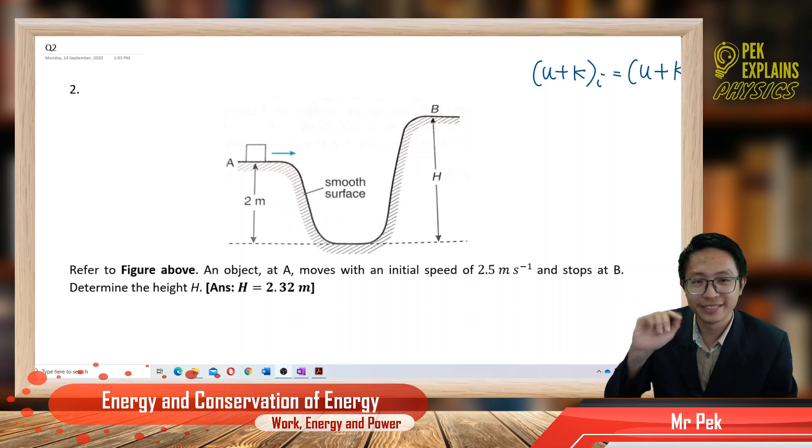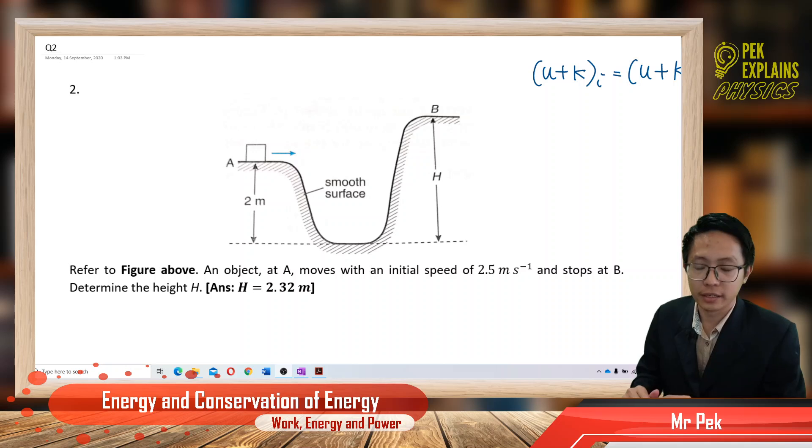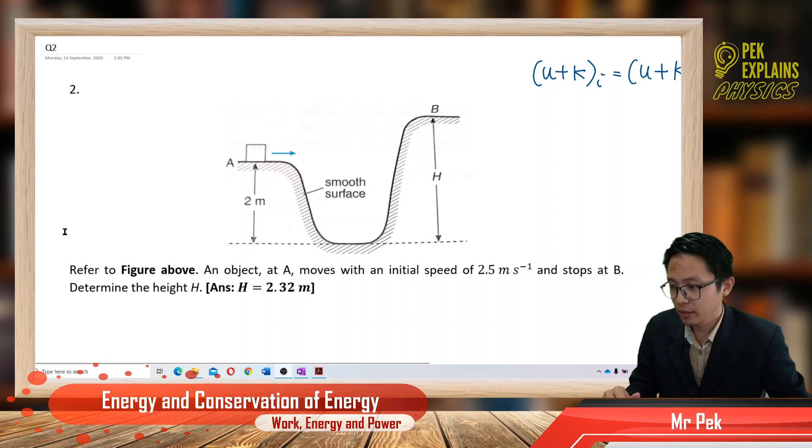Hi everyone, now is the second example in conservation of energy. Refer to the figure above. An object at A moves with an initial speed of 2.5 meters per second and stops at B. Determine the height h.